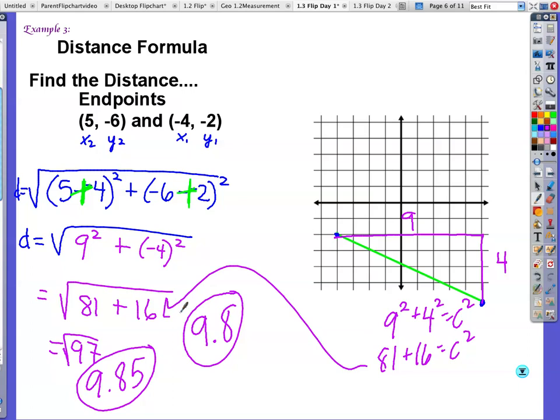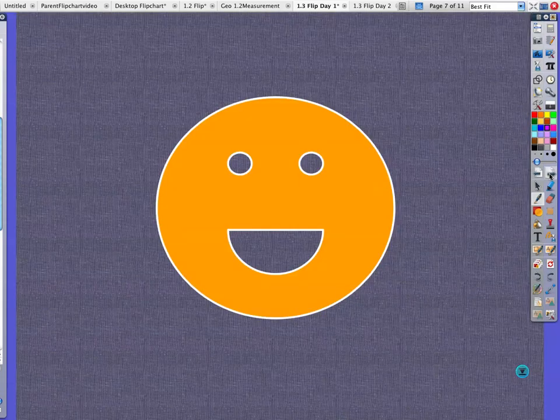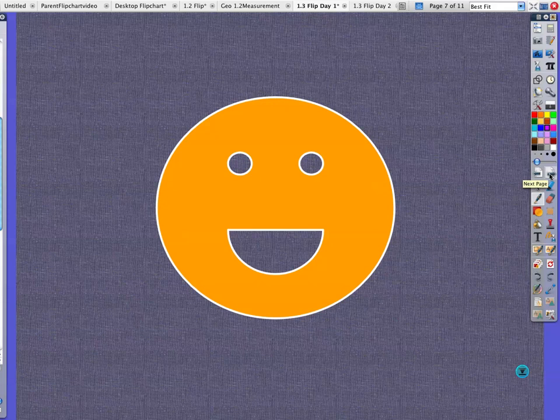That's the same as this. Oh my gosh, 97 equals c squared. And then we would say back to these answers. It is the same. So that formula is the Pythagorean theorem in disguise. And that concludes our lesson for today.